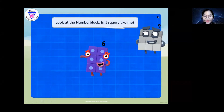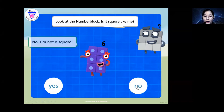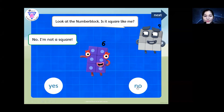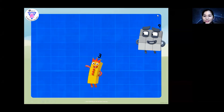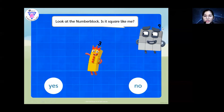Now let's move on. Look at the number block. Is it square like me? No, it's not square. That is a triangle. Number three — does it look like number nine? No, it's not. So because it's number three, this is the shape of number nine — it's square, right?